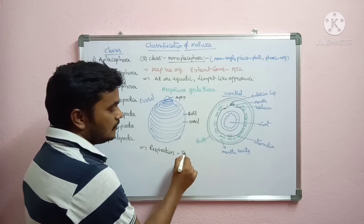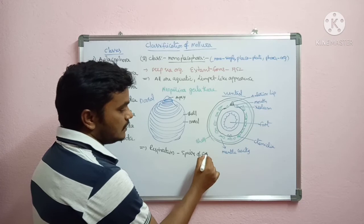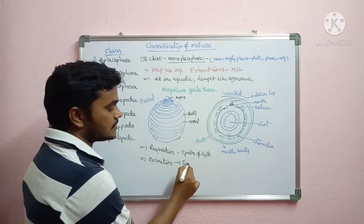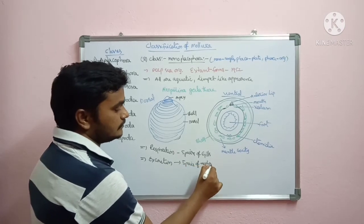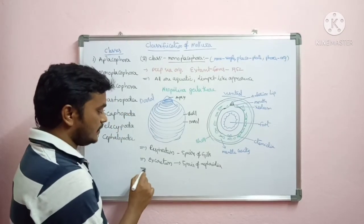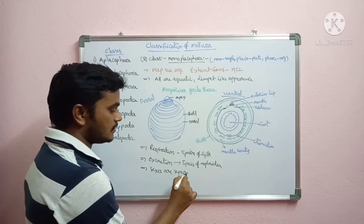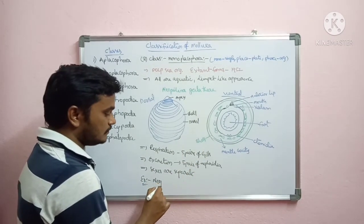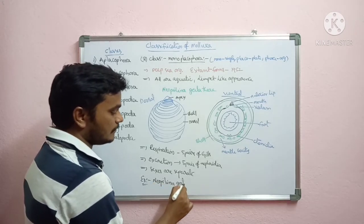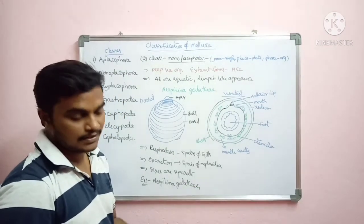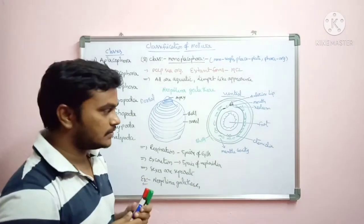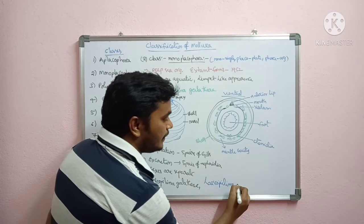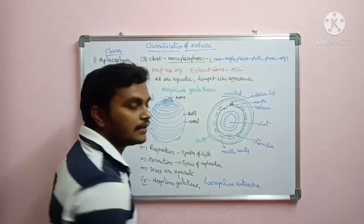Respiration in Monoplacophora is conducted by five pairs of gills; in some there are six pairs. Excretion is also conducted by five pairs of nephridia. Sexes are separate. Examples are Neopilina galathiae and Laevipilina antarctica.